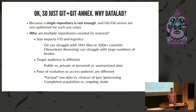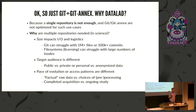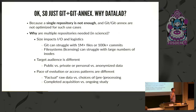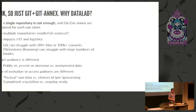Why is there a need for dedicated software on top of git and git-annex? The single most important reason is that a single repository is typically not enough for many scientific workflows. For example, if you try to put a million files into a git repository or do a hundred thousand commits, you quickly see the end of the system.